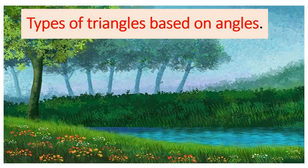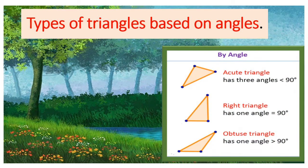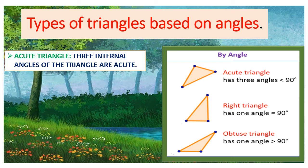Types of triangles based on angles. Examples: Acute triangle. Three internal angles of the triangle are acute, less than 90 degrees.